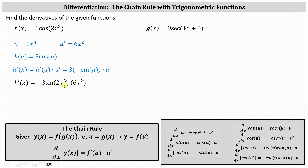Let's simplify by multiplying negative 3 and 6x squared, and write the derivative as h prime of x equals negative 18x squared sine of 2x cubed.